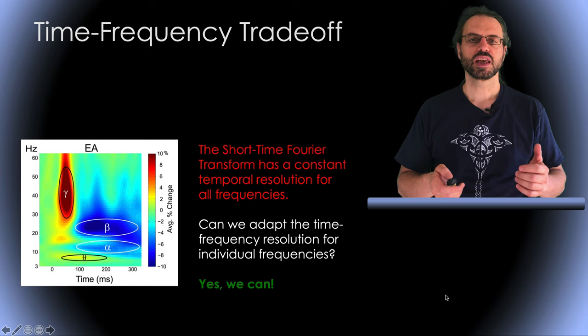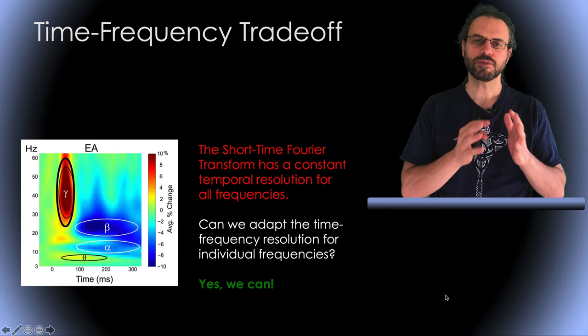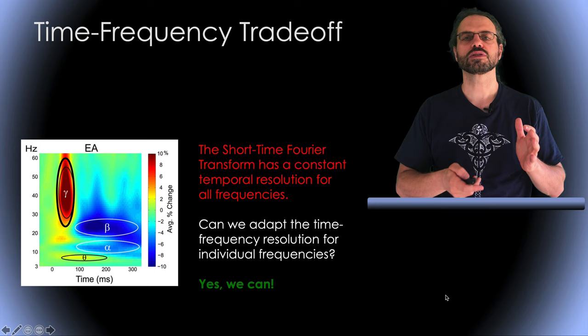Why is this important for EEG? Well, EEG may contain short bursts at high frequency, for which we need high time resolution, here at gamma for example. And in EEG, there is also longer oscillations at low frequencies, for which we need relatively high frequency resolution, here at theta for example.